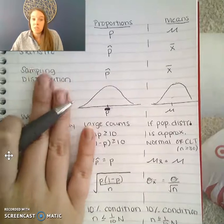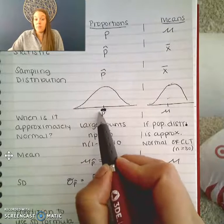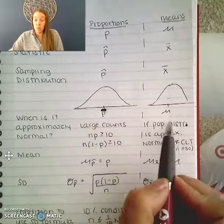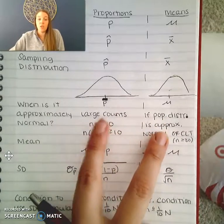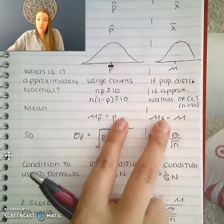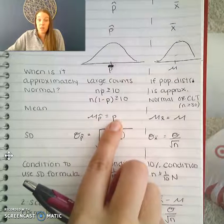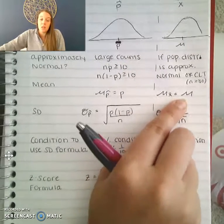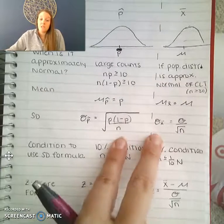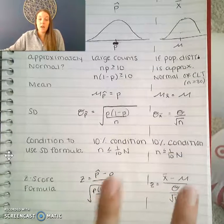That wraps up everything in unit five — unit five was all about sampling distributions. A sampling distribution is the distribution of many samples, and your center is always going to be the true population proportion or the true population mean. You can assume normality by checking large counts or the Central Limit Theorem. The mean of your sampling distribution equals the true proportion or true mean of the population, standard deviation formulas require the 10% condition, and then you apply the z-score formula.